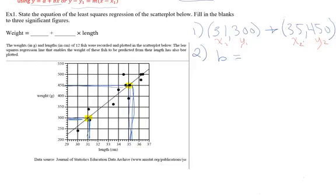So it's alphabetically, x is always the first coordinate. So you now have y2 minus y1, so that's 450 minus 300 over x2, which is 35, minus x1, which is 31.